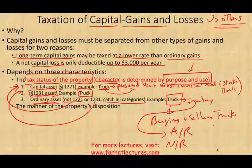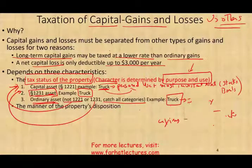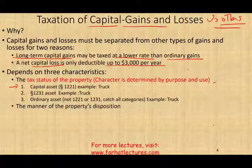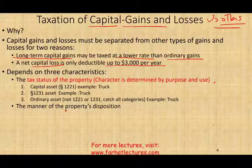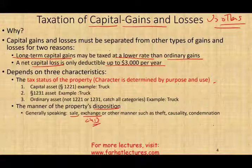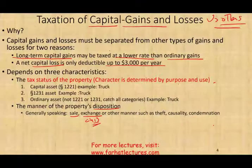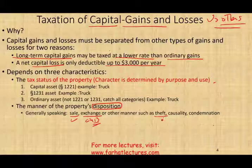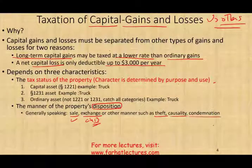The first thing to know is how to differentiate between capital assets, Section 1231 assets, and ordinary assets. Also, the way a transaction is taxed depends on the manner of property disposition. You can sell it, exchange it — and we discussed tax-deferred exchanges in a prior chapter — or you could dispose of the asset through casualty loss, theft, or condemnation. Those are all forms of disposition.